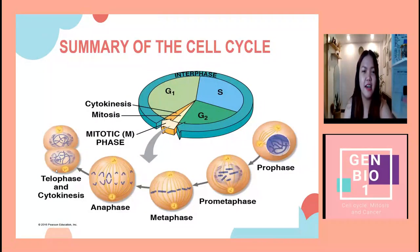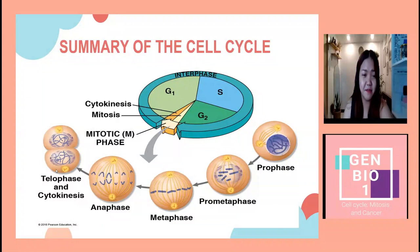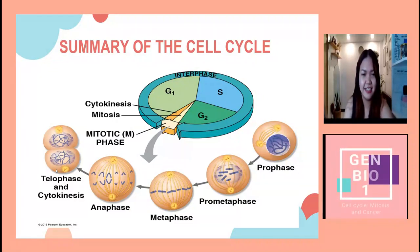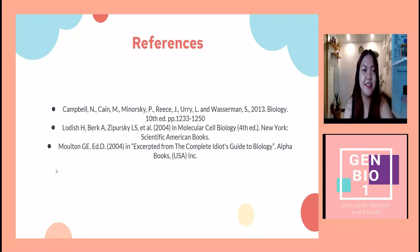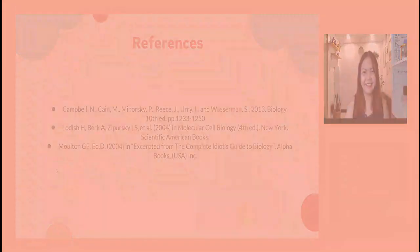As a summary, the cell cycle includes the interphase and the mitotic phase. In the mitotic phase, you have prophase, prometaphase, metaphase, anaphase, telophase, and cytokinesis. And that's all for the cell cycle. I hope you learned a thing or two. Stay safe, see you in the next video!